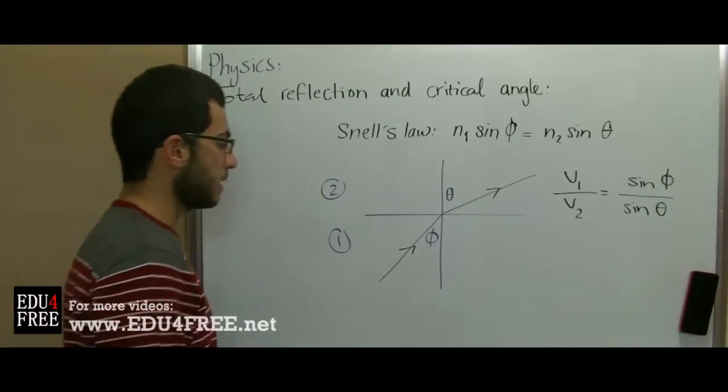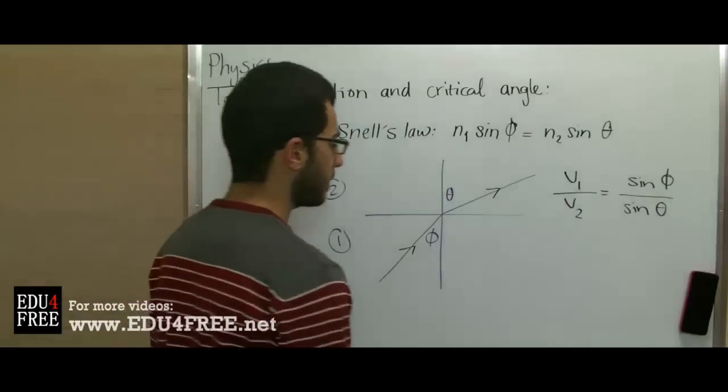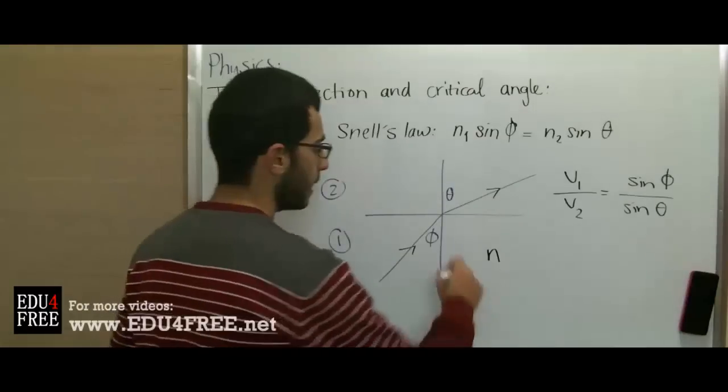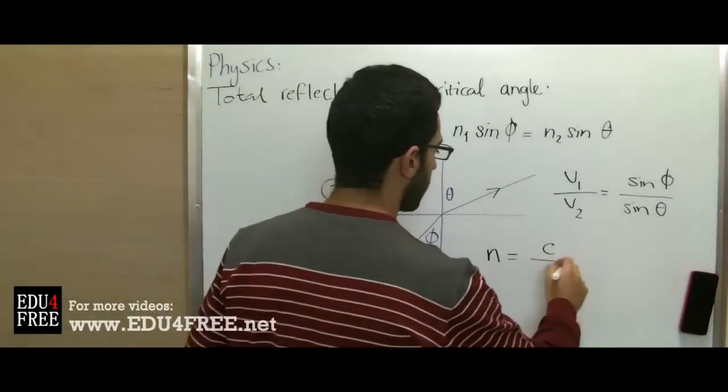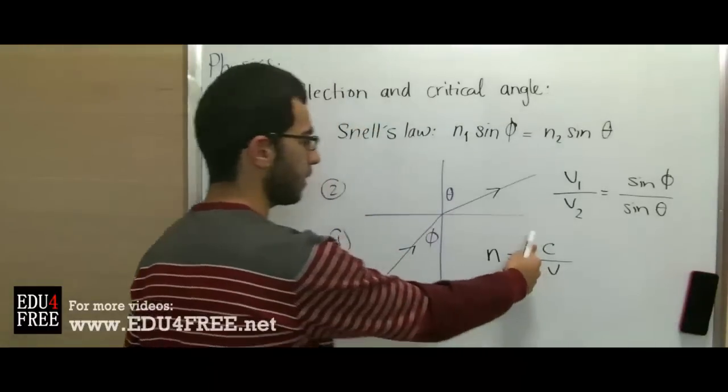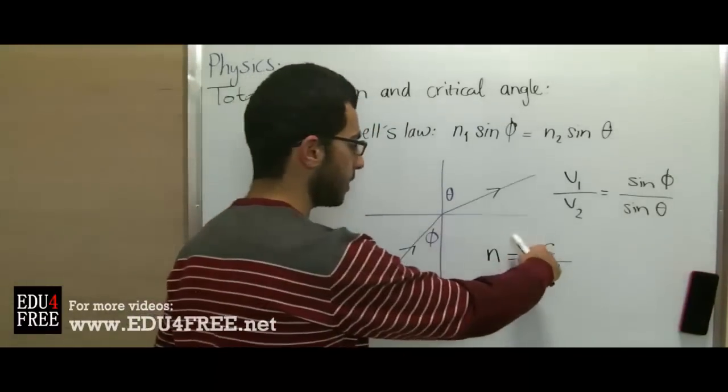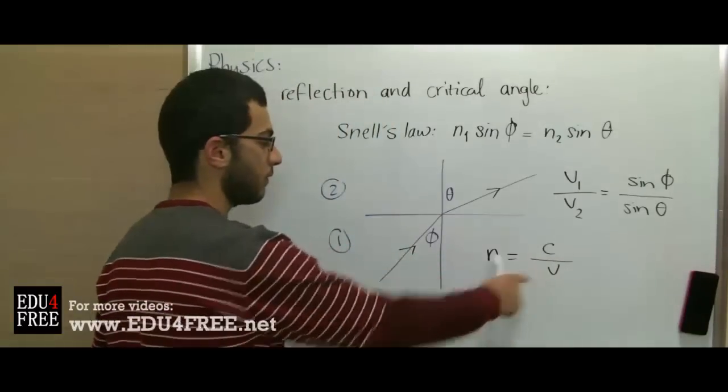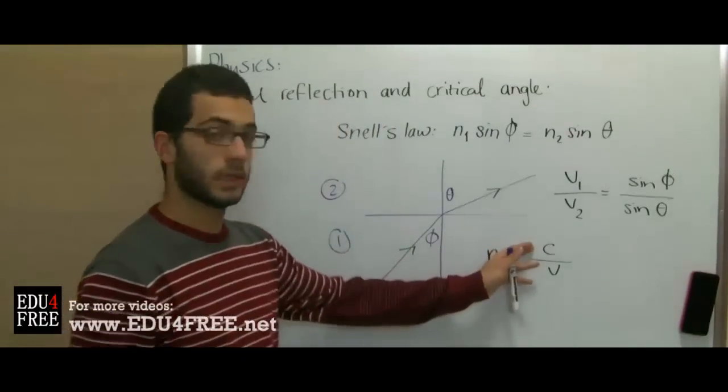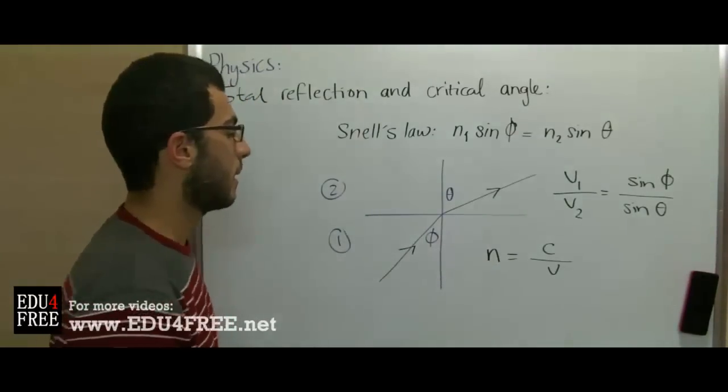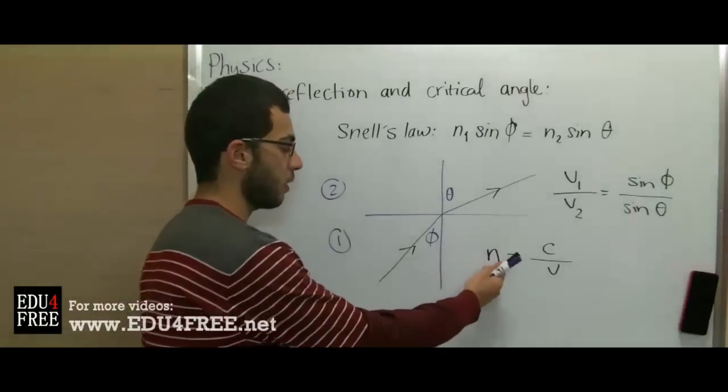There is something called the refractive index, which is n, and n equals c over v. c is the velocity of light, which is 3 times 10 to the power of 8 meters per second. This is the velocity of light in air over the velocity of light in the medium, which gives us the refractive index. It is always higher than 1.